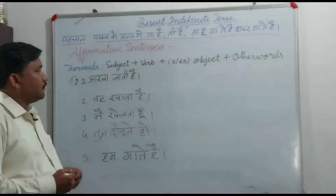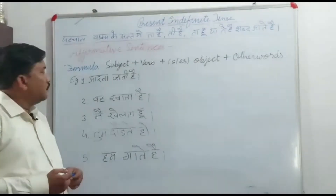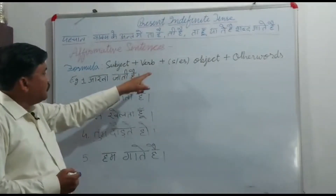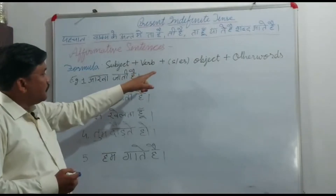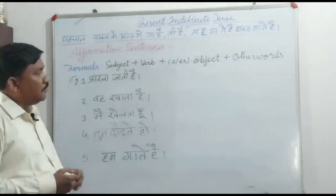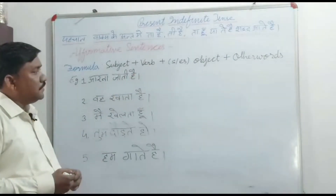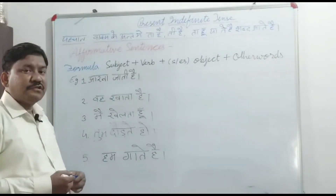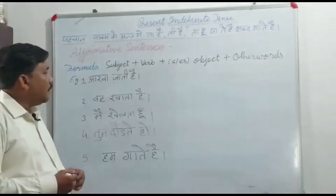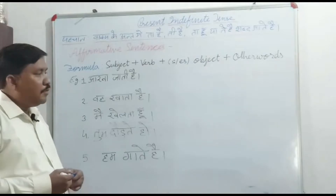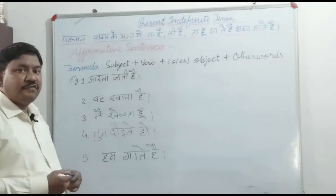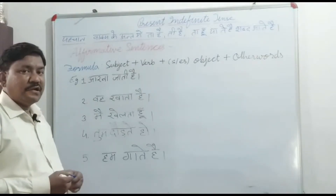Affirmative sentences ke rules or formula: Subject plus verb plus S or ES plus object plus other words. Singular subject mein hum S or ES jodte hain affirmative sentences mein. Plural subject mein hum S or ES ka use nahin karte, verb ki original form hi lagate hain.